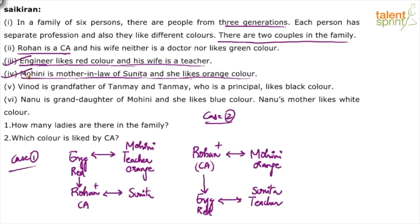Point five: Vinod is the grandfather of Tanmay, and Tanmay who is a principal likes black color. Considering the first part — Vinod is the grandfather of Tanmay — Vinod should be in the first generation. In Case 1, it is possible to place Vinod there: Vinod and Mohini are married, forming the grandfather-grandmother pair. Tanmay comes in the next generation.